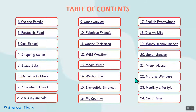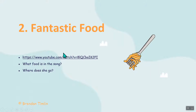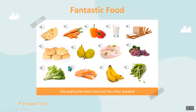Topic two is fantastic food. Let's click on this one again — it's a YouTube video. What food is in the song? Kids, look out for the words which is on food, and where does she go? We can probably guess where she goes. It's a nice little song.